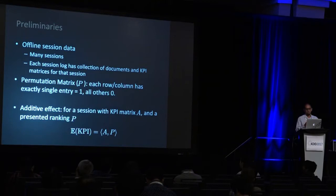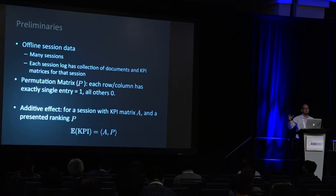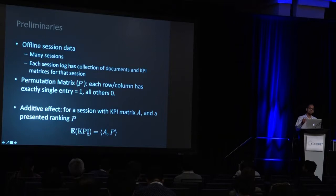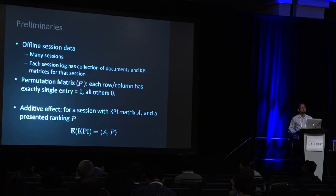We'll make an important assumption called the additive effect model: if you have a KPI matrix A and you pick a ranking or permutation B, the expected value of that KPI for that ranking is the inner product of A and B. Concretely, if you showed an ad in position one with revenue R1 and an ad in position three with revenue R2, the expected revenue for that session is R1 plus R2. It's an additive effect model.